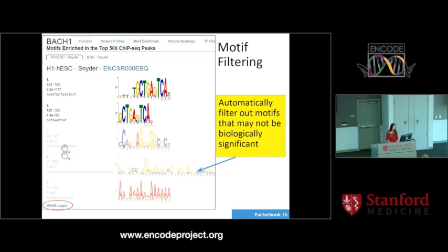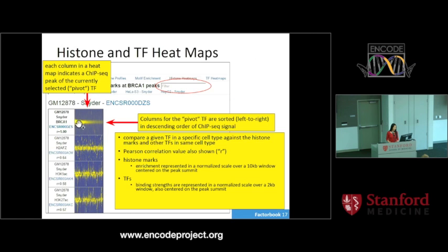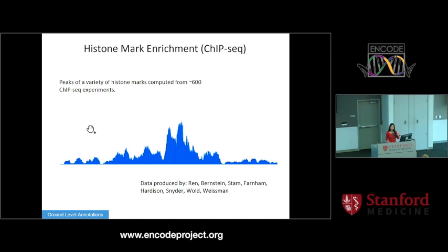We filter our data so you can see all five motifs enriched in a given ChIP-seq peak set. The top two are more likely to be biologically meaningful, while the others may be false positives, but we keep them in case they are cofactor motifs. The heat map shows each column as a ChIP-seq peak across the entire genome - this is a pivot TF, in this case BRCA1. You can look at all ChIP-seq peaks for BRCA1 and see whether histone marks around these peaks are correlated with BRCA1 or other TF binding.